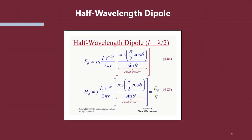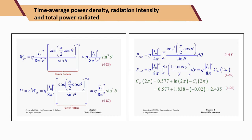Based on the equation for the finite length dipole antenna, let's assume we have a half-wavelength dipole antenna with L equal to lambda over 2. These are the equations for the average power density W_av, the radiation intensity, and the total radiated power of a half-wavelength dipole antenna. The constant C for lambda over 2 gives C times 2pi equal to 2.435.